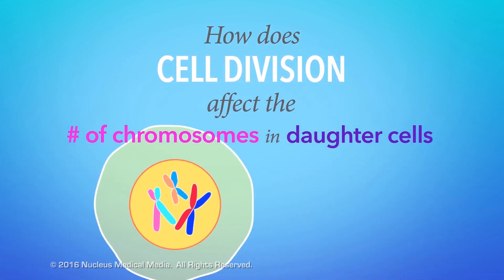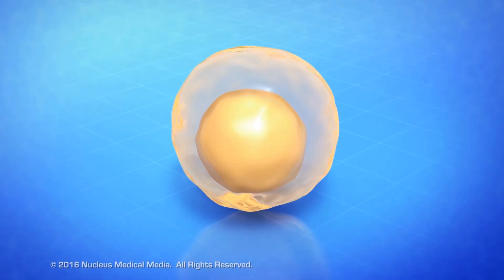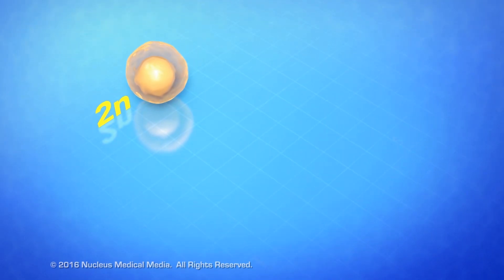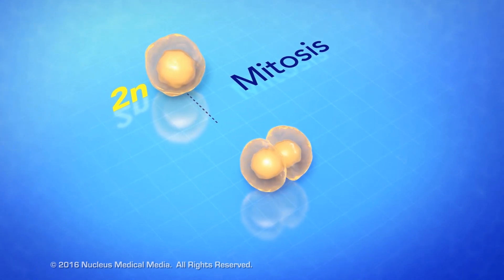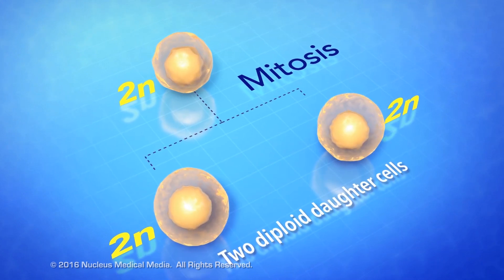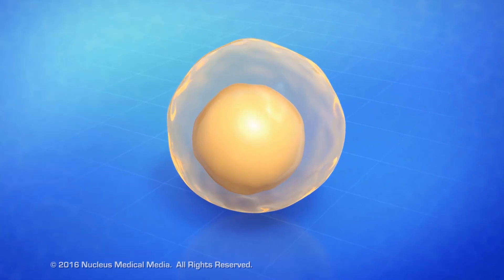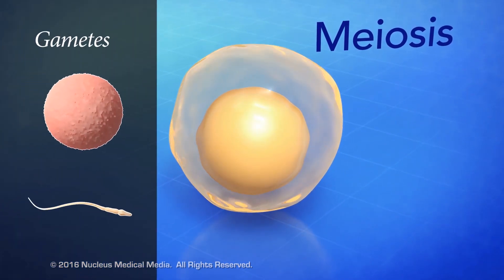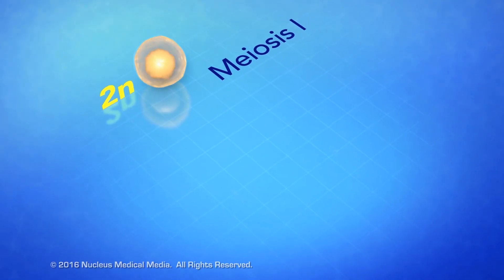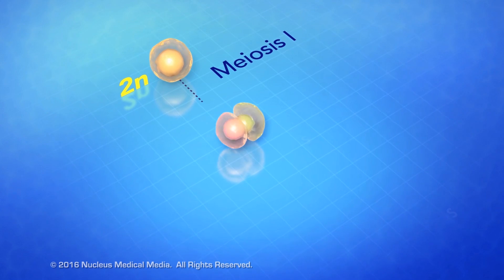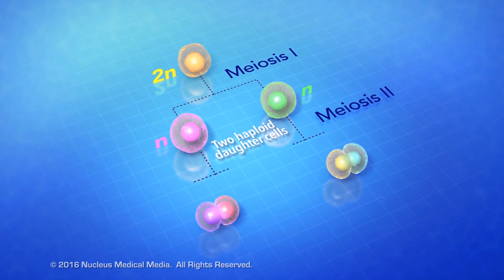So how does cell division affect the number of chromosomes in daughter cells? Somatic cells only reproduce by mitosis, a type of cell division that results in two genetically identical diploid daughter cells. In contrast, meiosis is a type of cell division that only produces gametes. In meiosis, a diploid cell undergoes two cell divisions to produce four genetically different haploid gametes.